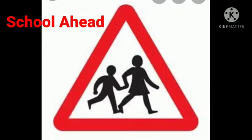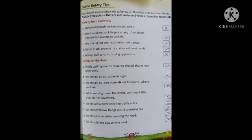Next — school ahead. The road is also marked with white strips known as a zebra crossing. This road sign indicates that there is a school ahead or nearby. Drivers are required to slow down and drive carefully to avoid accidents. यह किसका sign है? School ahead — मतलब आगे school है, तो अपने vehicle को slow चलाएं।